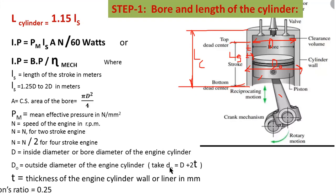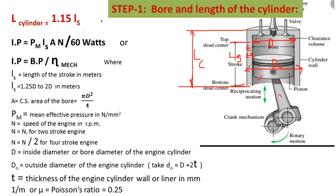Poisson's ratio 1/m, or mu, equals 0.25 to 0.3 — there are no units for Poisson's ratio. These are the four main formulas for finding out the bore diameter and stroke length of the cylinder, and they are very important.